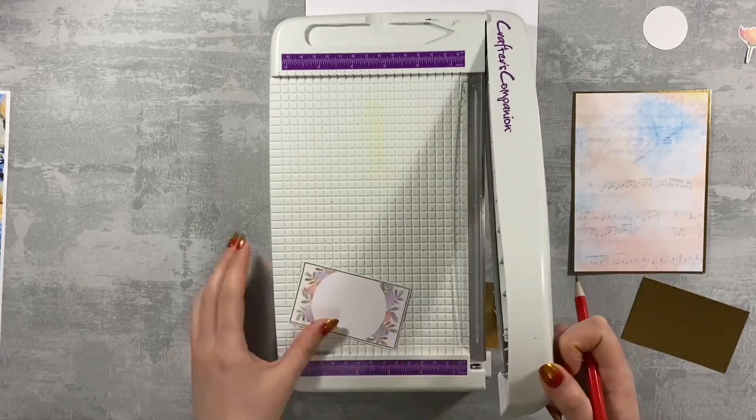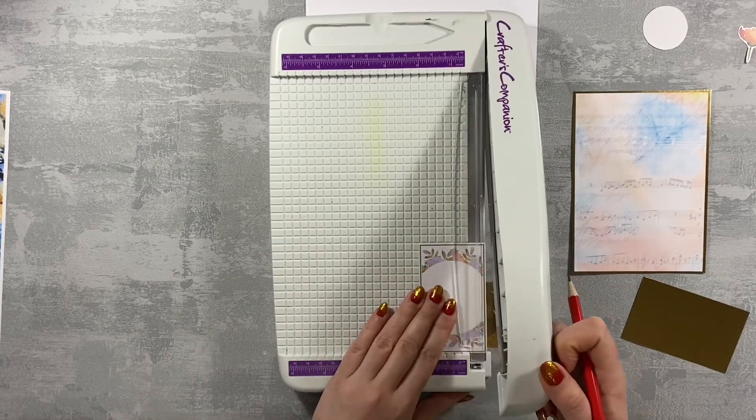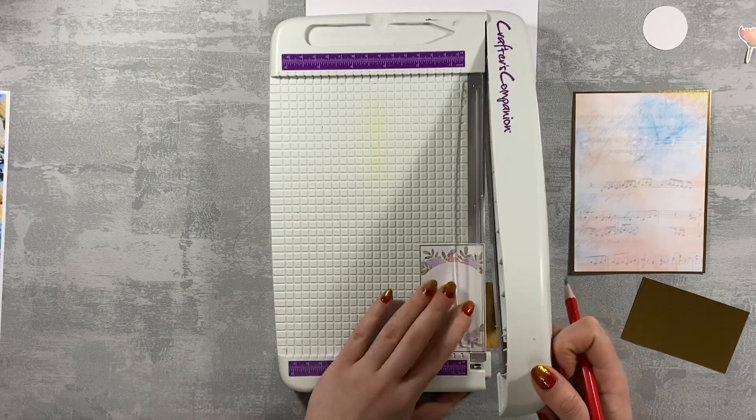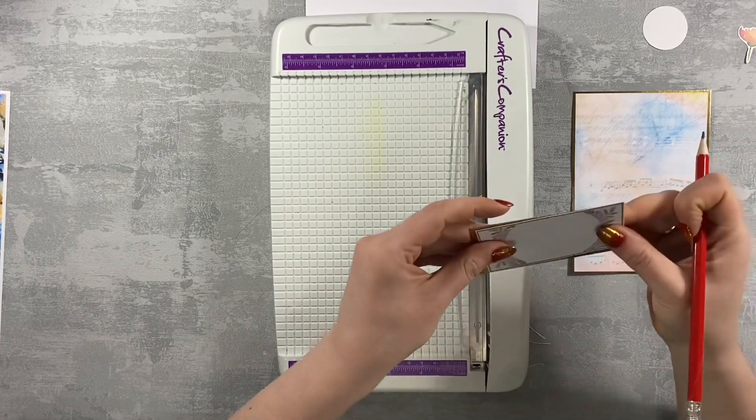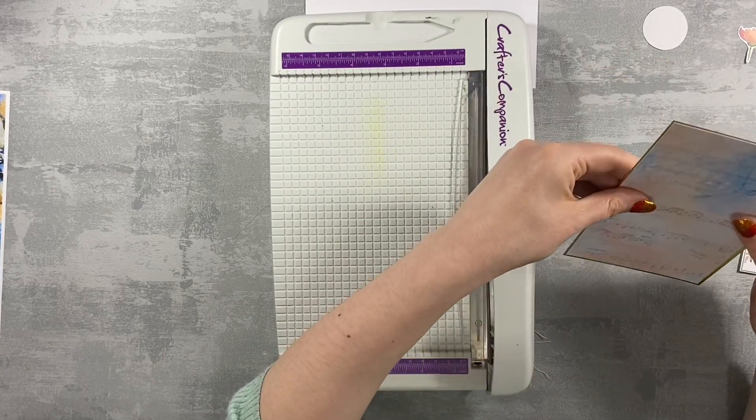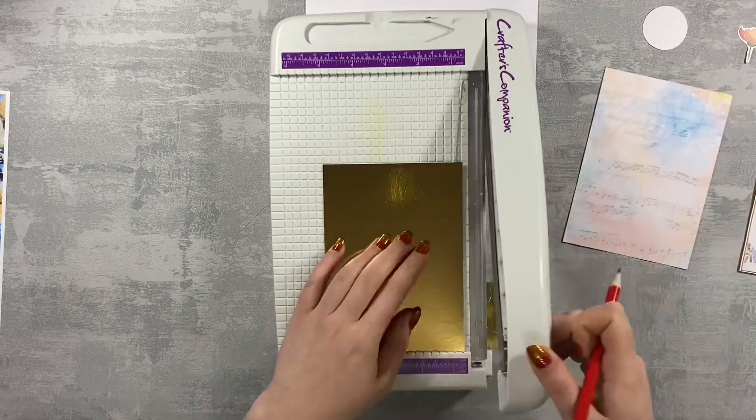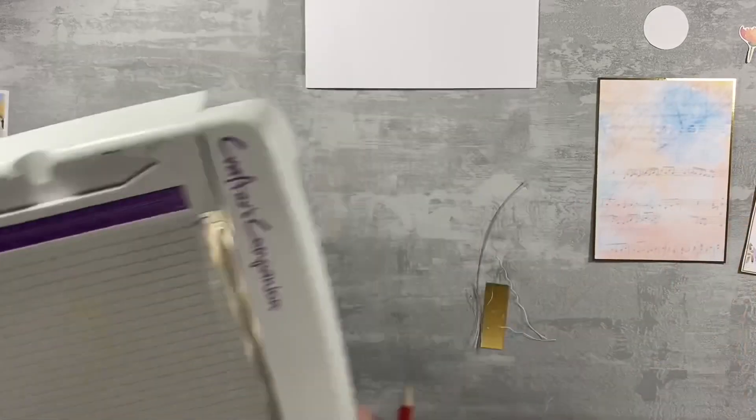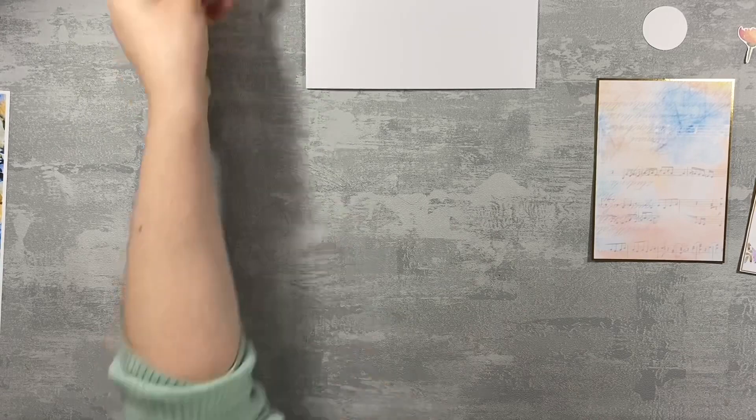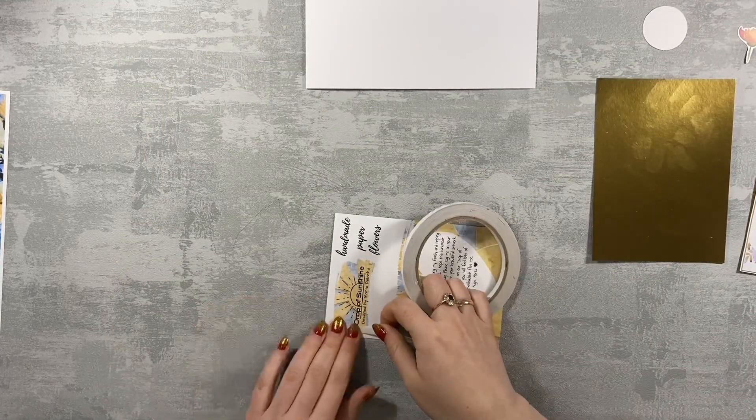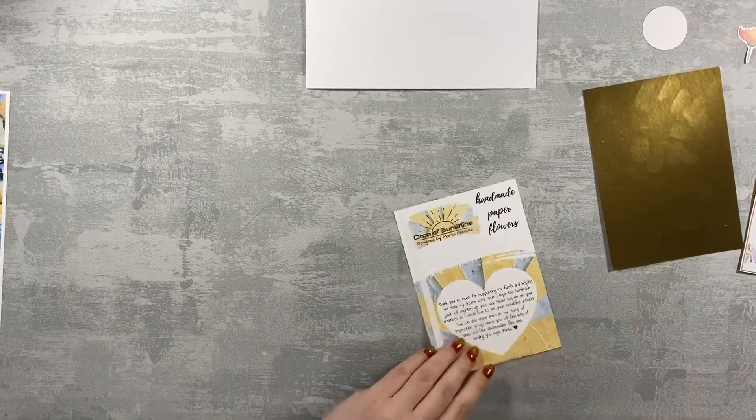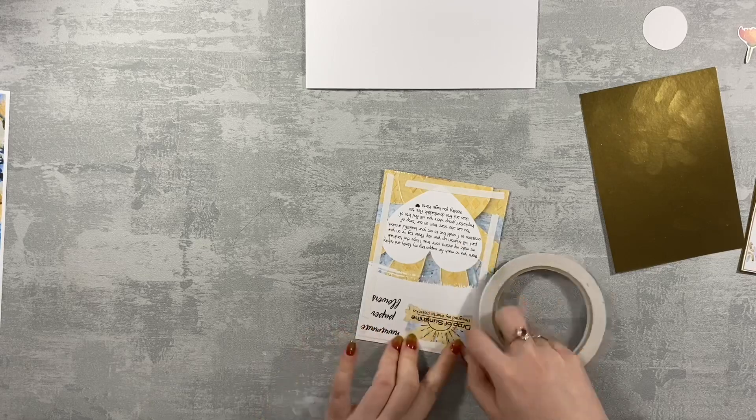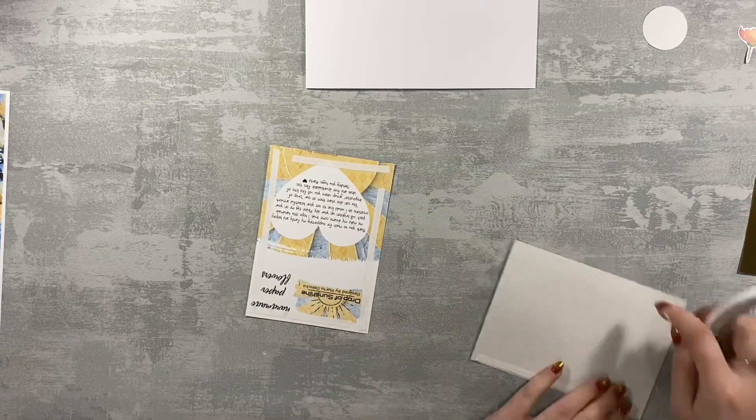This little rectangular frame comes from this set of elements to cut which has 12 pages filled with little elements. There's over 130 elements in this set, so I encourage you to check it. The links you will find down below in the description area. Now as always, I'm not measuring anything. I just mark myself some line with the pencil and I'm just going to be gluing them down.